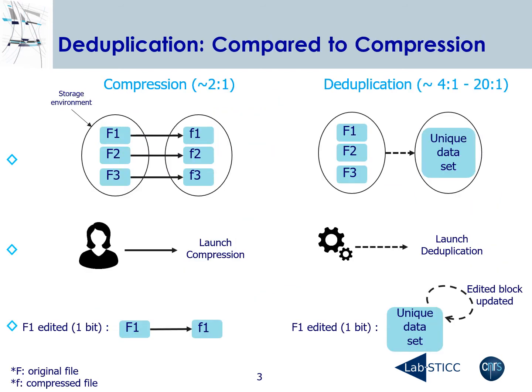Even if it might be considered as some sort of compression, there is a difference between compression and deduplication. For example, compression tries to compress one unique file at a time — each file has its own compressed version. However, in the deduplication case, it operates across an entire drive to remove all copies and save a unique version for each data. Also, deduplication is executed by the system, so it is completely transparent for the user, whereas compression is generally executed by the user.